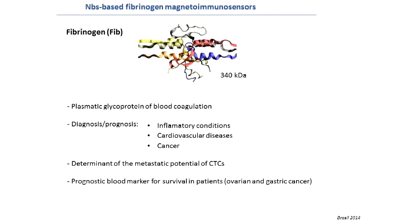We demonstrated the possibility of using these nanobodies as a biological recognition system for the construction of magnetic immunosensors towards fibrinogen. Fibrinogen is a plasmatic glycoprotein of blood coagulation which plays an important role in the diagnosis and prognosis of inflammatory conditions, cardiovascular diseases, and cancer.